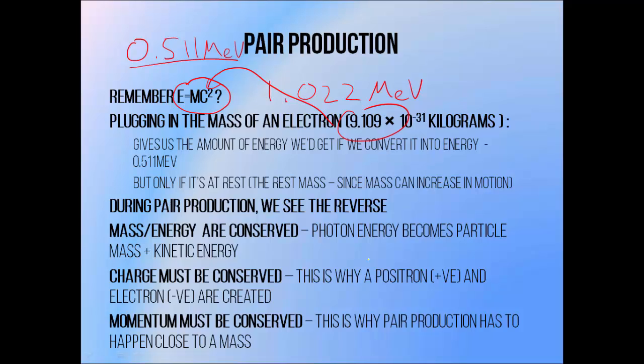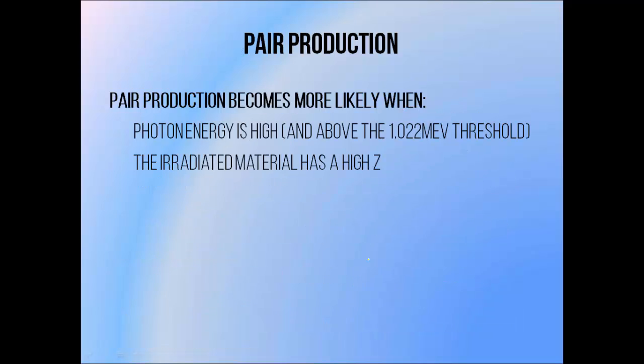There's also a law of conservation of charge, obeyed here because the electron and positron have equal and opposite charges which cancel out and add to zero, matching the initial charge of the photon, which is also zero. The reason that a photon can only undergo pair production next to a nucleus or an electron is the law of conservation of momentum. This means that the photon isn't able to give all of its momentum to the electron-positron pair, so it has to happen next to an object with mass, so it can donate the rest of its momentum to that object. Pair production is most likely when the photon energy is high, above the minimum of 1.022 MeV, above which the interaction becomes steadily more likely as energy increases. It's also more likely when the photon is passing through a high atomic number material.